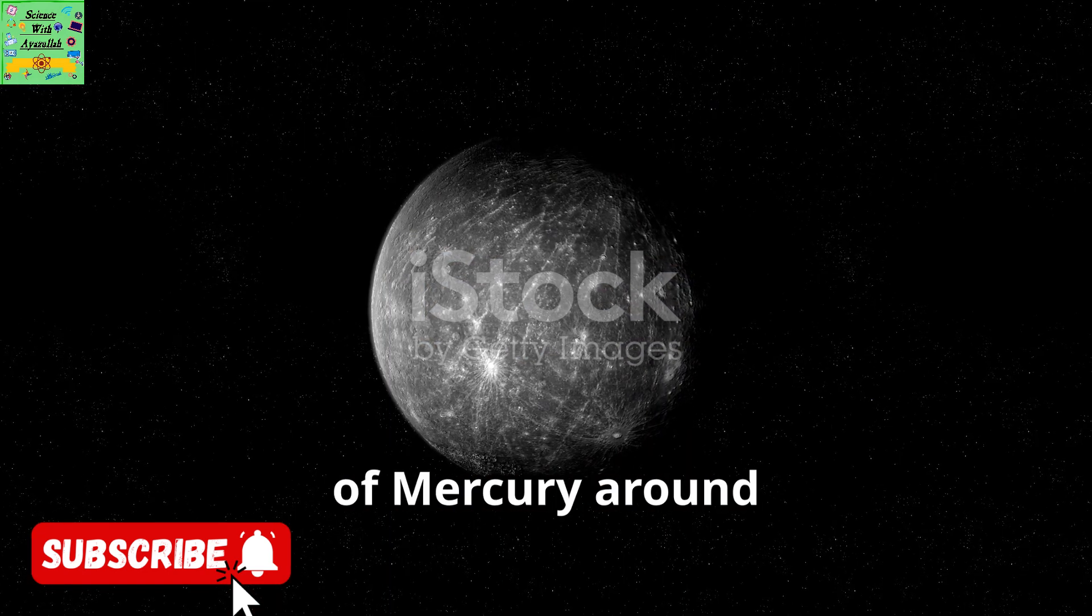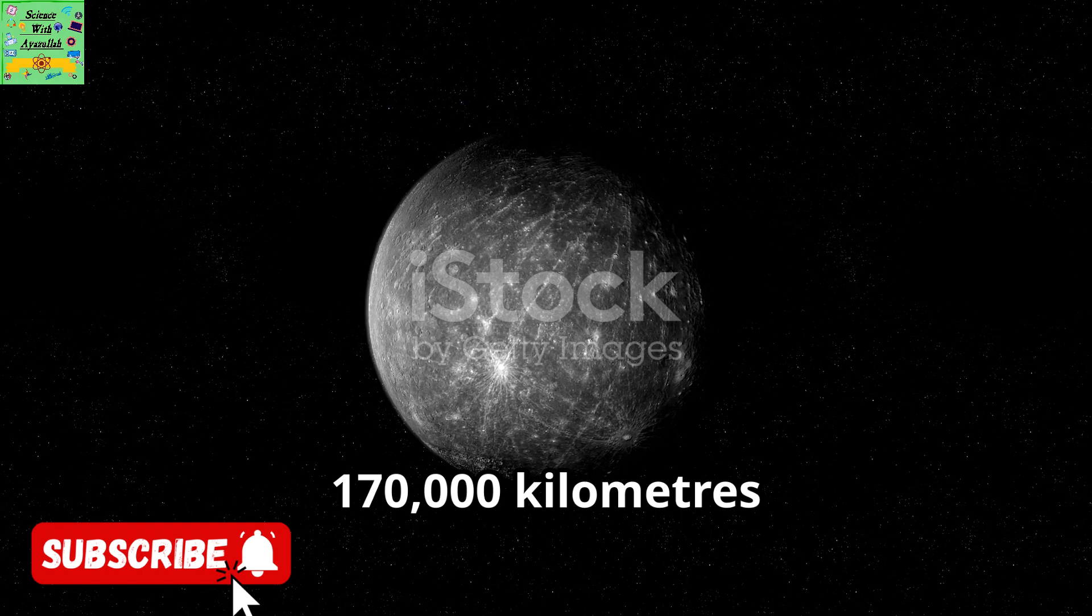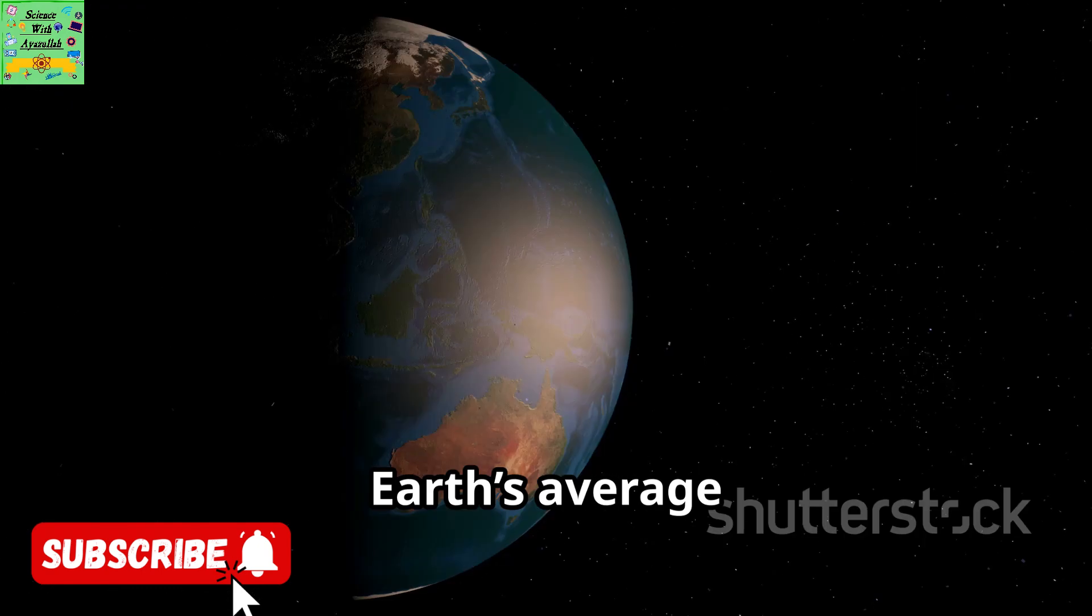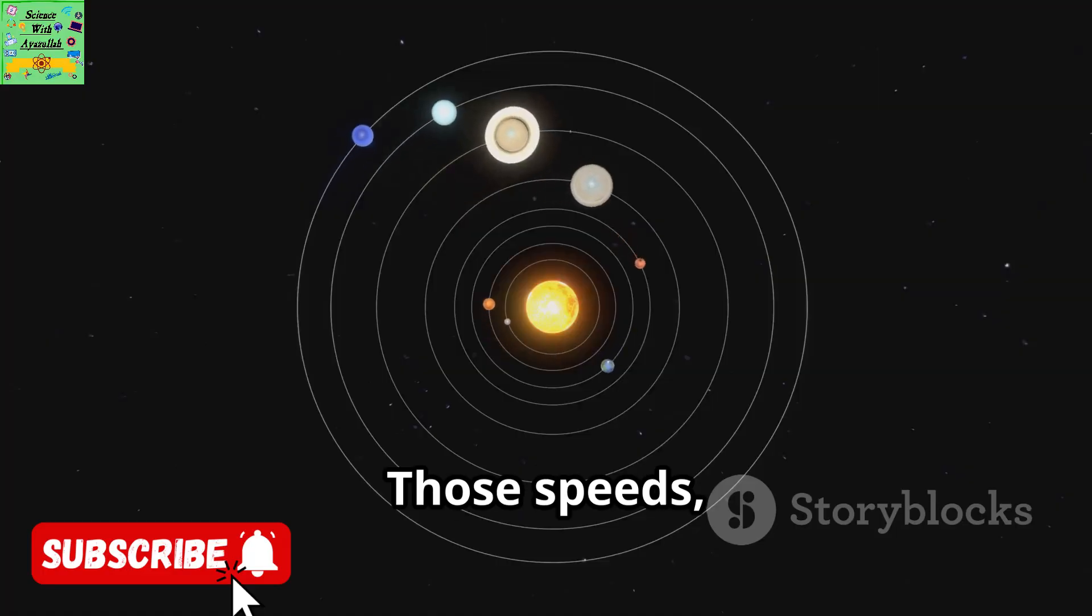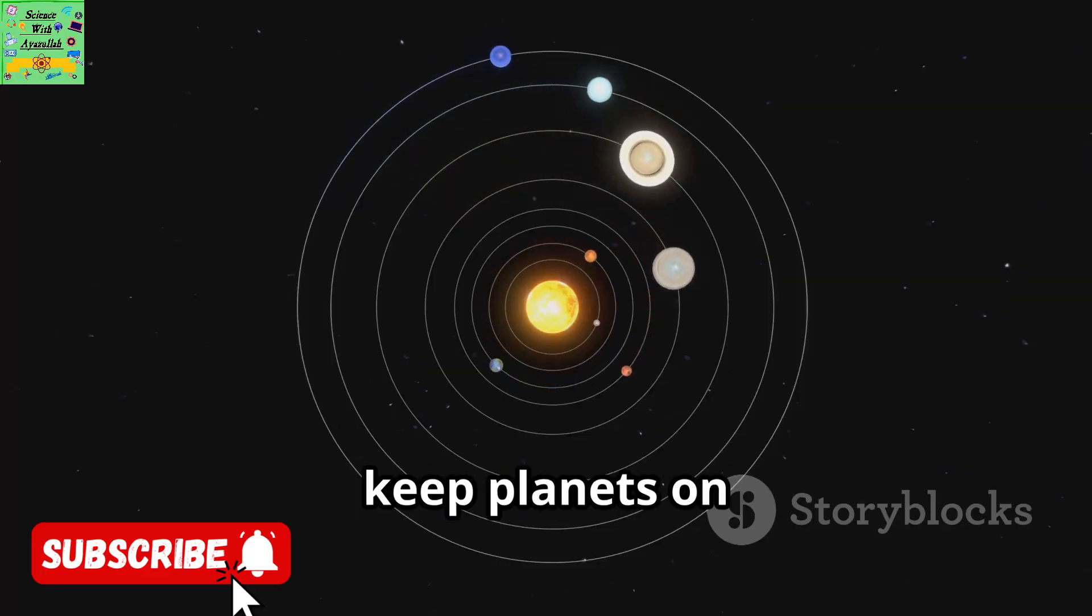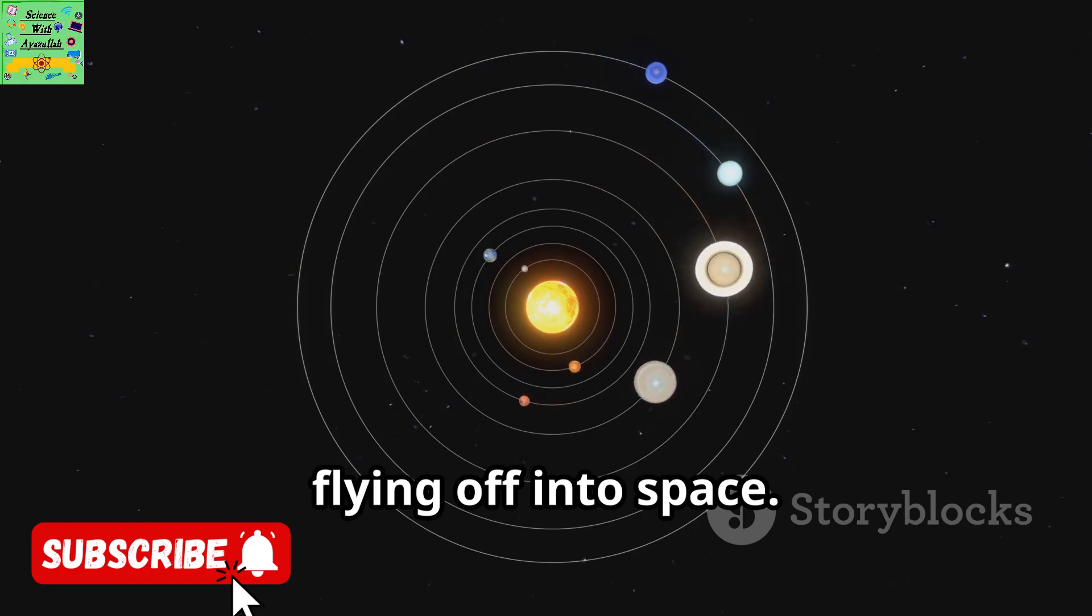The average speed of Mercury around the Sun is about 170,000 kilometers per hour. Earth's average speed is about 100,000 kilometers per hour. Those speeds, and the Sun's gravity, keep planets on steady orbits, not flying off into space.